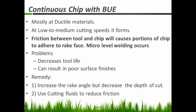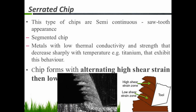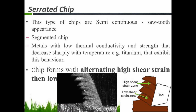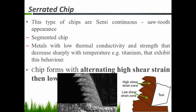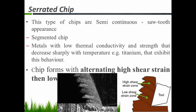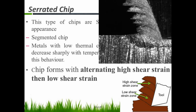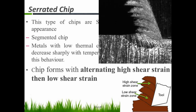And the last one is serrated chips. This type of chip is semi-continuous and has a sawtooth appearance — it is a segmented type. Metals with low thermal conductivity and strength that decreases sharply with temperature, for example titanium, exhibit this behavior. Serrated chips form with alternating high shear strain and low shear strain, as shown in the figure.